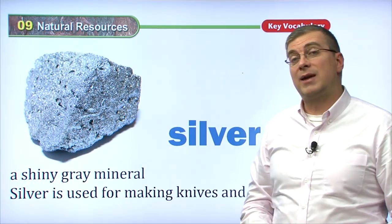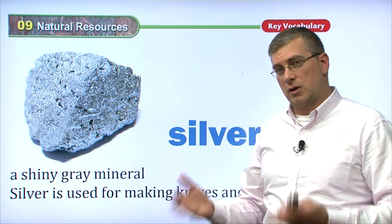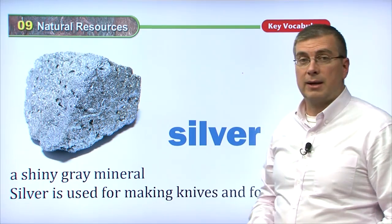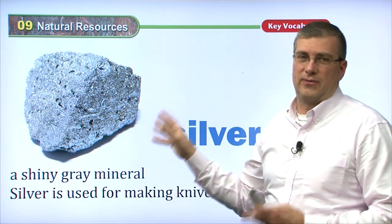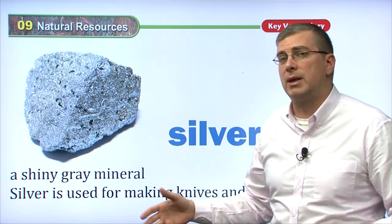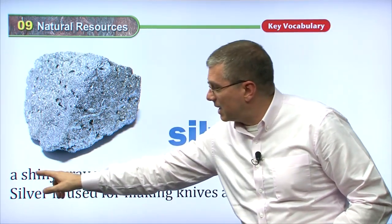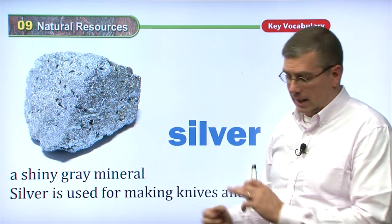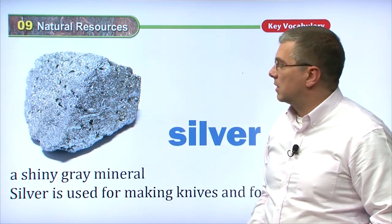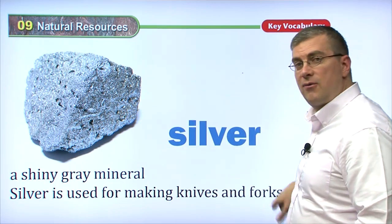Another famous type of mineral is silver. Silver is similar to gold — it's also been used for money, and it's also used for jewelry. But it's not as colorful as gold and it's not as rare. Silver is more common than gold, so it's not as expensive. Silver is a shiny gray mineral, as you can see here.